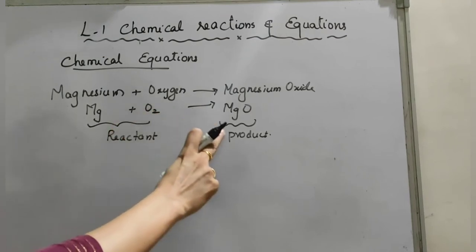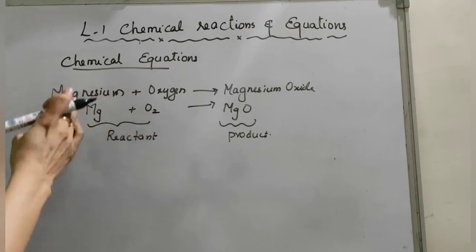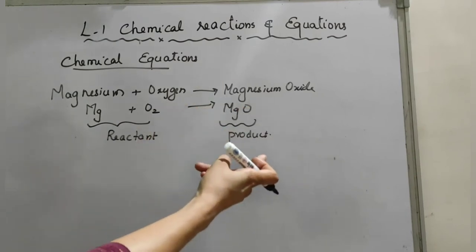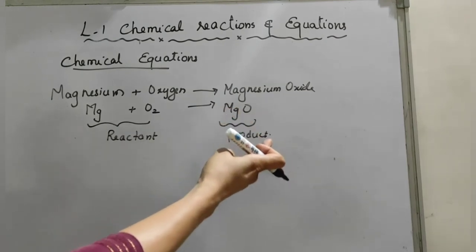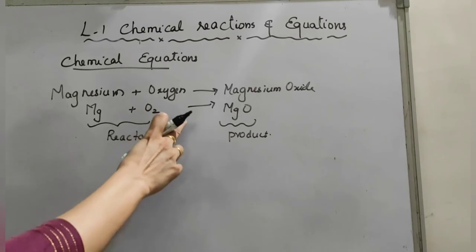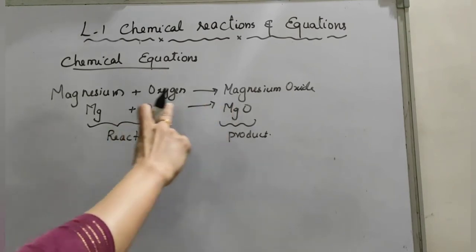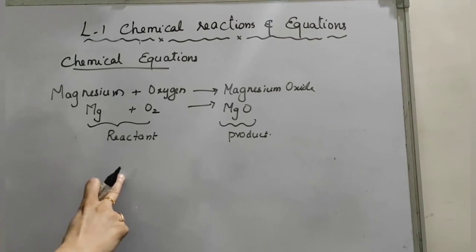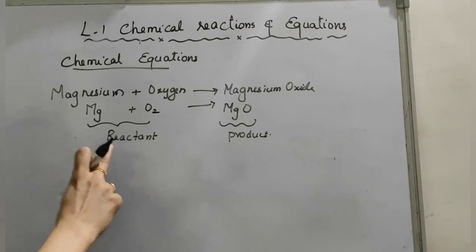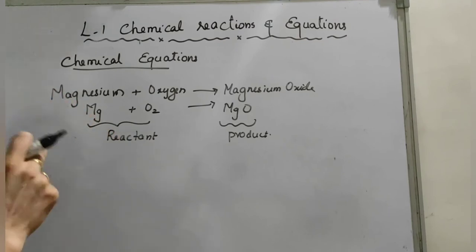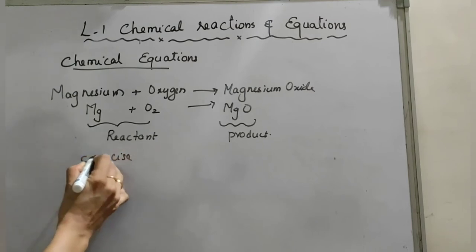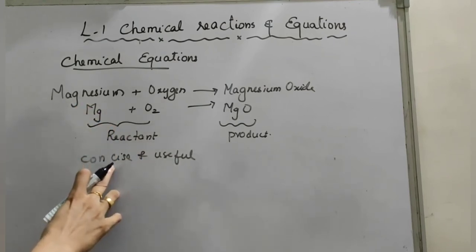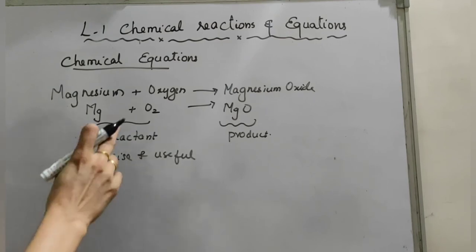The word equation shows the changes in reactants and products through an arrow mark. The arrow mark is placed between reactants and products. Reactants are written on the left-hand side with a plus sign between them; products are written on the right-hand side. The arrowhead points in the direction of the reaction. Chemical equations can be made more concise and useful, and a chemical equation represents a chemical reaction.